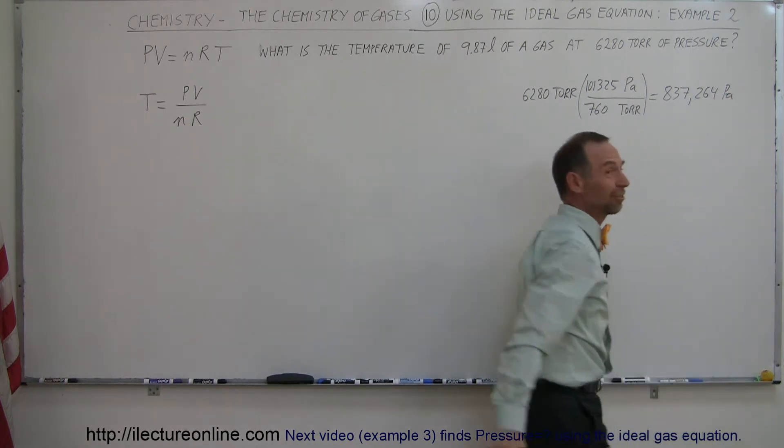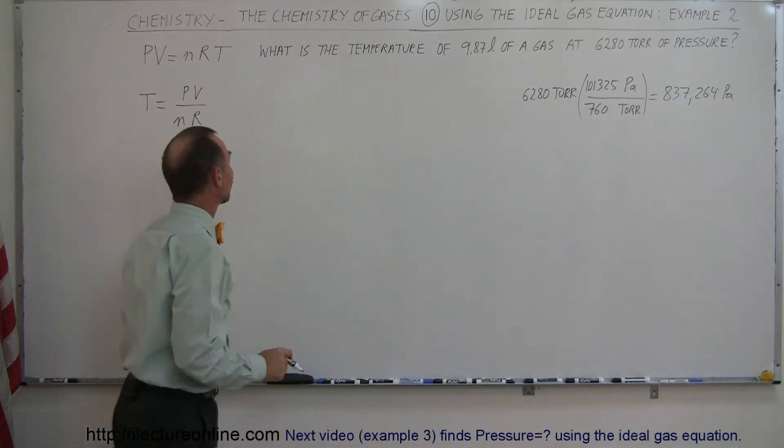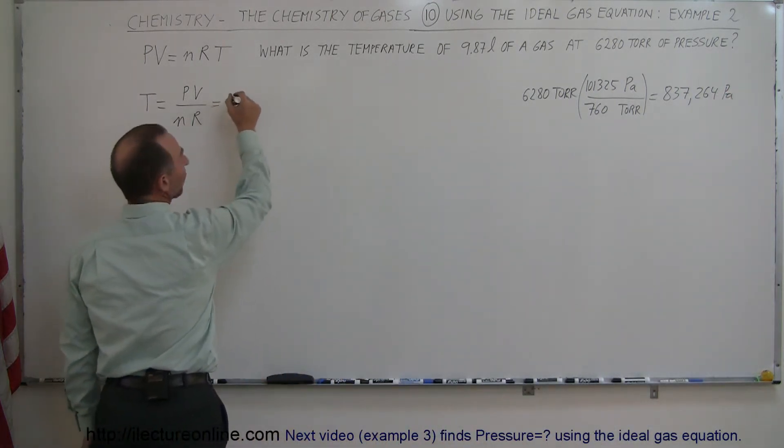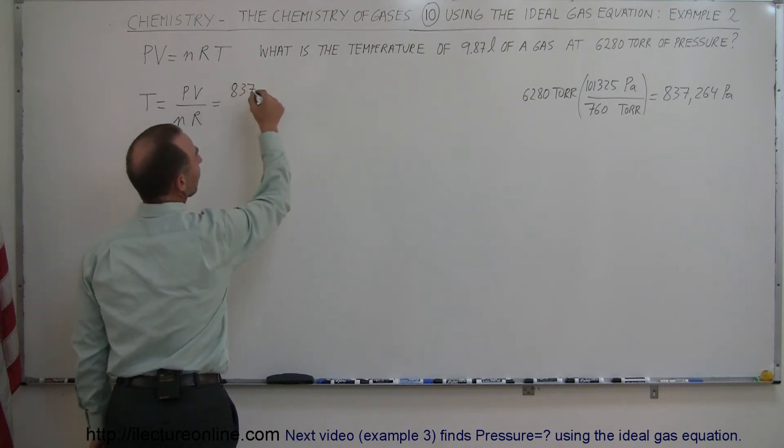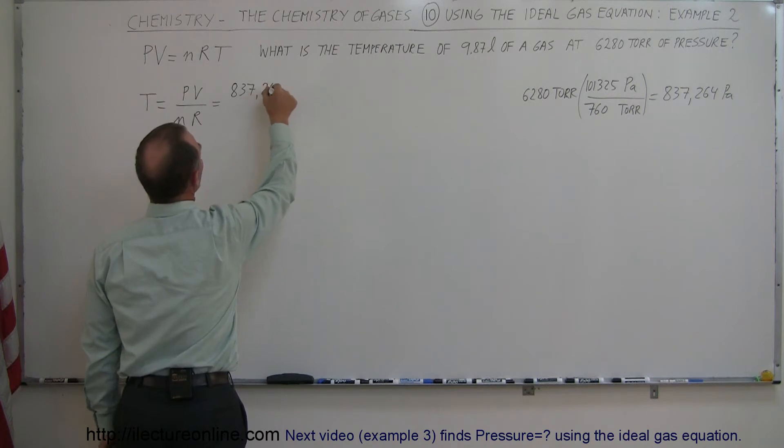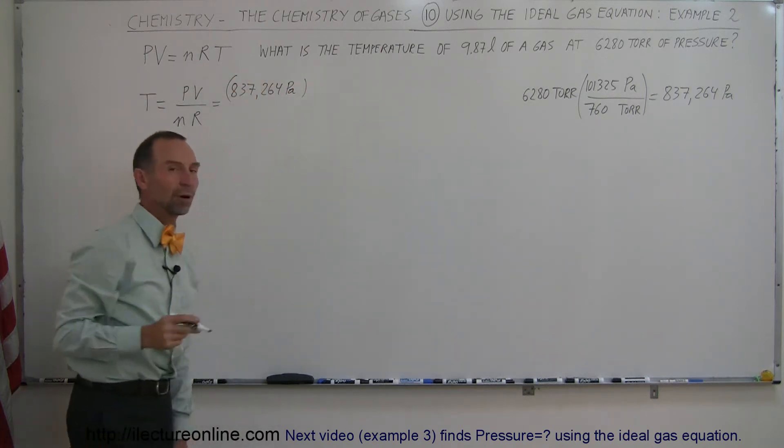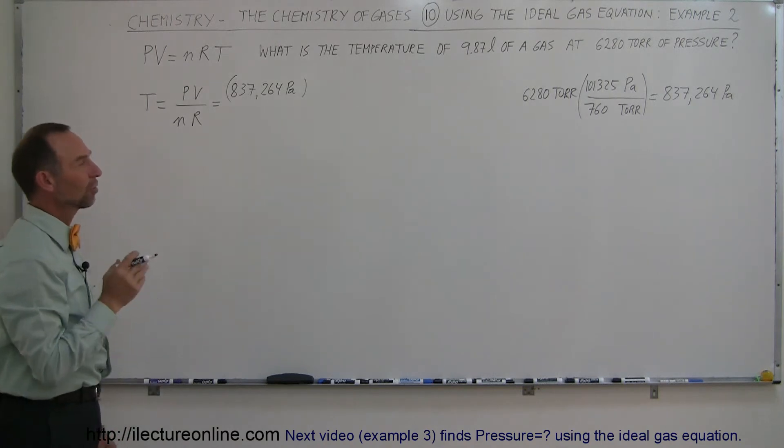This is way more significant figures than we need, but we'll just throw them in there. So we have a pressure of 837,264 Pascals, which is a little bit more than 8 times atmospheric pressure. Next, the volume.